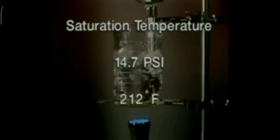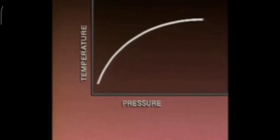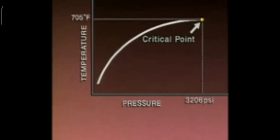At any given pressure, there is a corresponding temperature at which water will boil. This temperature is called the saturation temperature. For example, at standard atmospheric pressure, which is 14.7 PSI, the saturation temperature of water is 212 degrees Fahrenheit. When pressure increases, as it does in this boiler, the saturation temperature also increases. At 1,000 PSI, the saturation temperature of water is 545 degrees Fahrenheit. When the saturation temperatures for water at different pressures are plotted on a temperature versus pressure chart, a line is formed showing the relationship between saturation temperature and pressure. However, this relationship only holds true up to a certain point, called the critical point, which is 705 degrees Fahrenheit and 3,206 PSI.